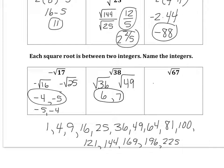And then 67, the square root of 67 is somewhere between the square root of 64 and the square root of 81, which is 8 and 9.